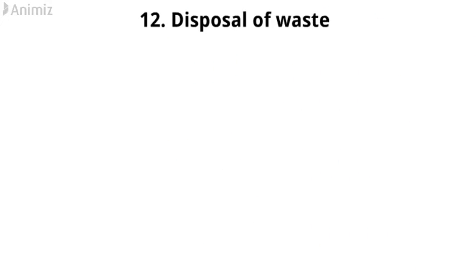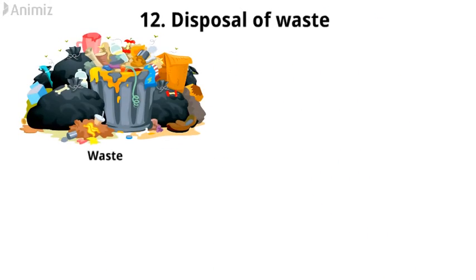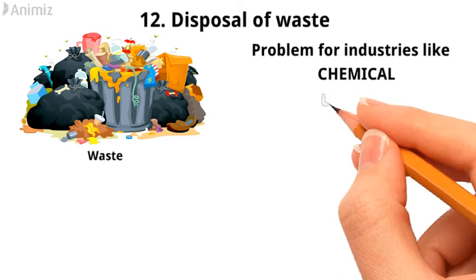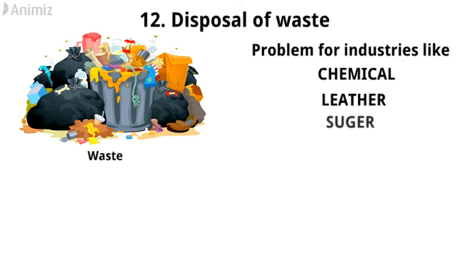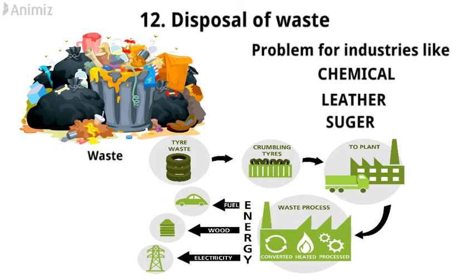Number 12: Disposal of waste. Disposal of waste is becoming a major problem for industries like chemical, leather, sugar, etc., so plant location should have proper provision for this.